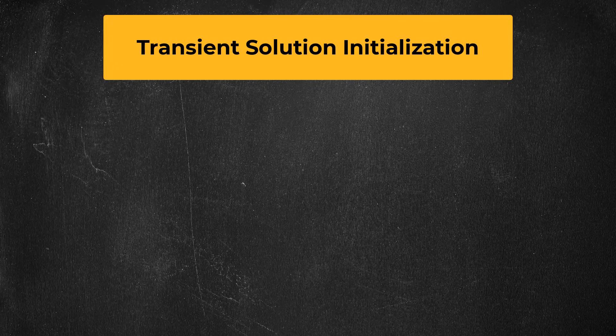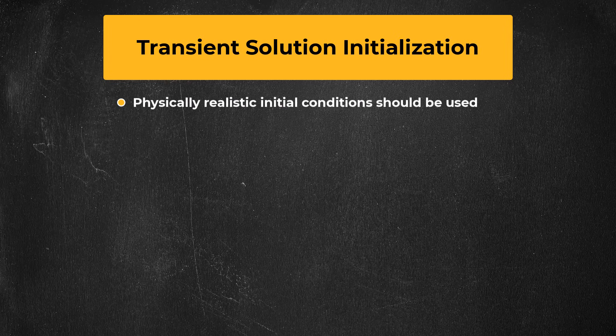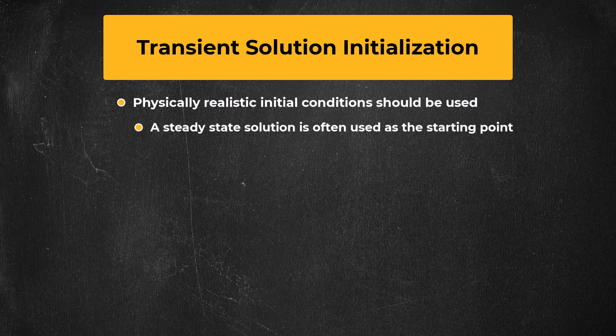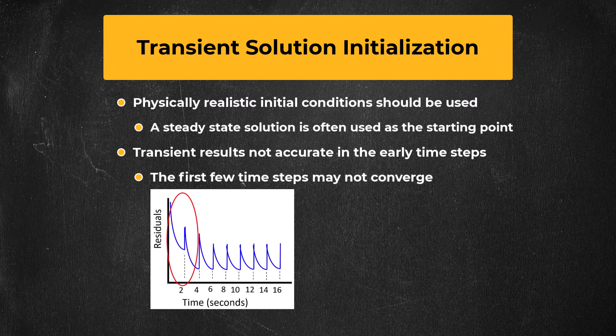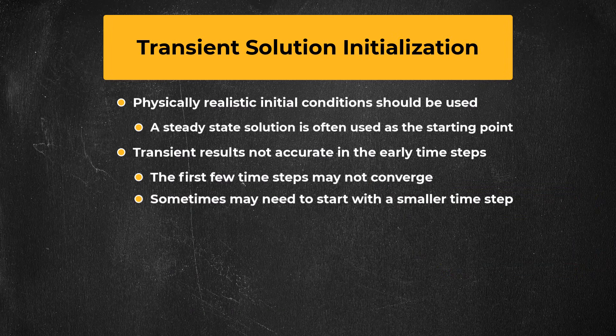One final topic that needs to be discussed is initialization. In transient simulations, it is important for initial conditions to be as physically realistic as possible. Keep in mind that depending on the problem, sometimes steady-state results can be a good initial guess, and also remember that when you don't know the precise initial condition, which is very often the case, the initial transient results will not be accurate, and as a result, the solution may not fully converge during the first few time steps. If that happens, it's completely okay as long as the solution does begin to converge after a few time steps, and keep in mind that it's sometimes necessary to begin with a smaller time step, which you can gradually increase as the solution progresses.